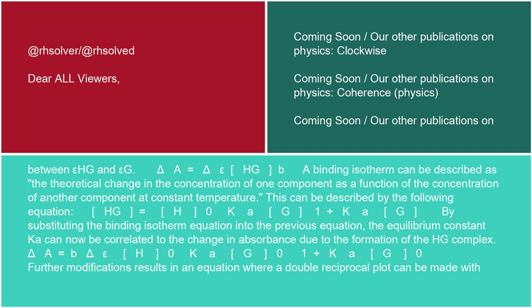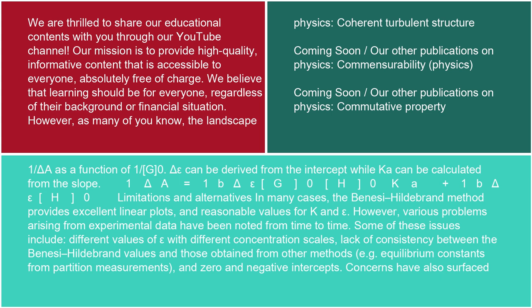The binding isotherm equation is: [HG] = H₀·K_a·[G] / (1 + K_a·[G]). By substituting the binding isotherm equation into the previous equation, the equilibrium constant K can now be correlated to the change in absorbance due to the formation of the HG complex: ΔA = b·Δε·H₀·K_a·G₀ / (1 + K_a·G₀). Further modifications result in an equation where a double reciprocal plot can be made with 1/ΔA as a function of 1/G₀.